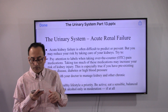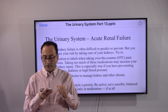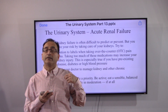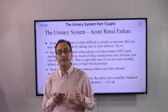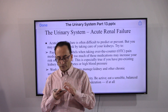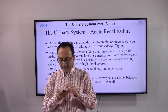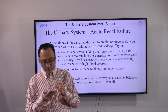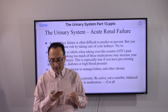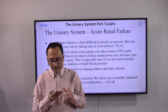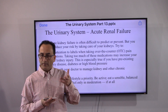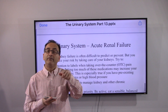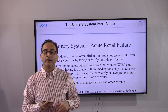Acute kidney failure is often difficult to predict or prevent, but you can reduce your risk by taking care of your kidneys. Pay attention to over-the-counter medications and don't abuse them without consulting a doctor. Work with your doctor to manage kidney and other chronic conditions. Drink plenty of fluids, maintain a healthy and active lifestyle, eat a sensible balanced diet, drink alcohol only in moderation, and quit smoking. That concludes the acute renal failure portion; next we will address chronic renal failure.